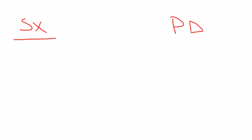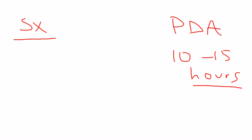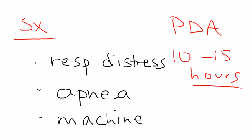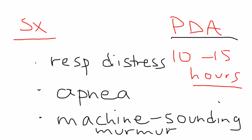A baby with patent ductus arteriosus — usually diagnosed within the first 10 to 15 hours after birth — will show symptoms related to compromised circulation and oxygenation. These include respiratory distress and possibly apnea. The heart will also produce a very characteristic murmur. On clinical vignettes, if you see a machine-sounding murmur, that's PDA — patent ductus arteriosus.